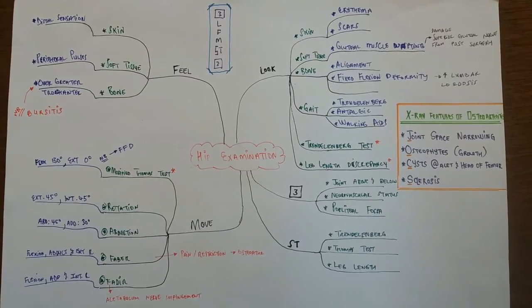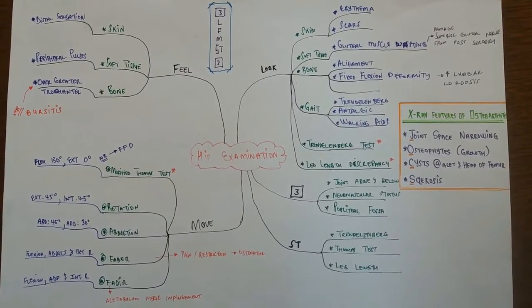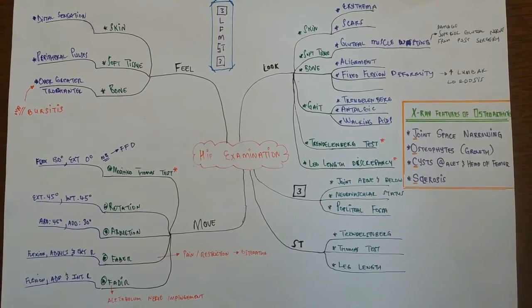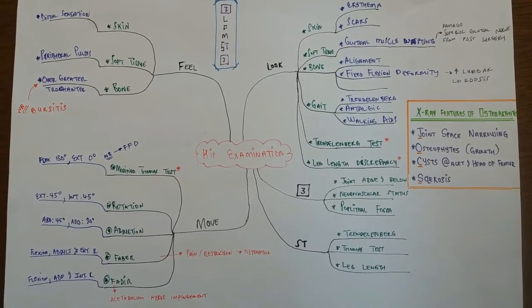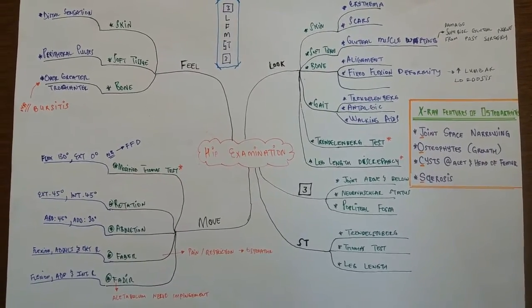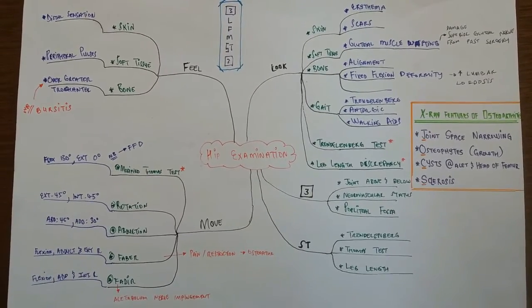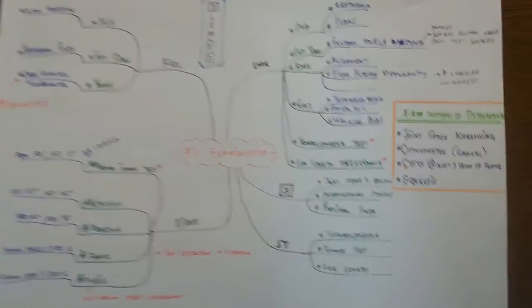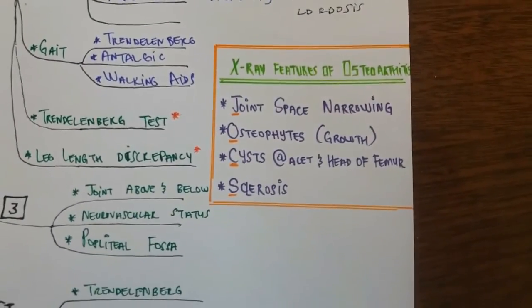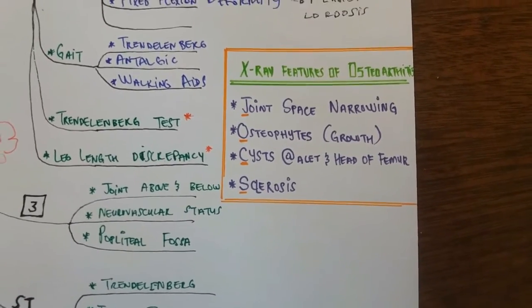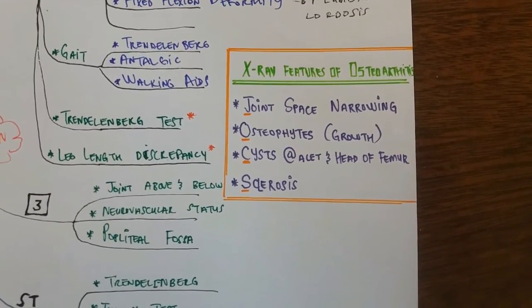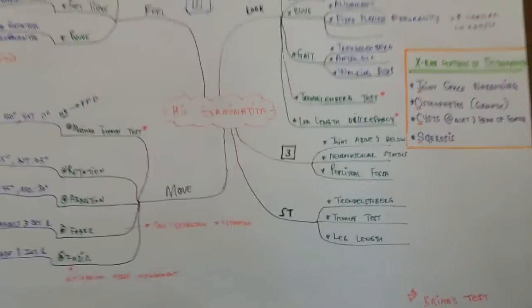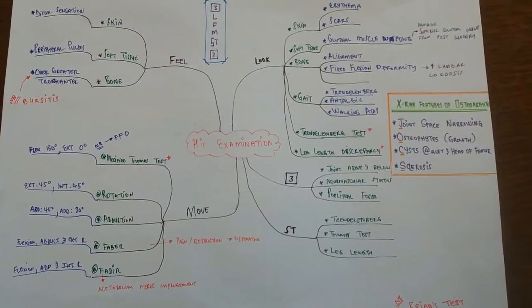To end things off, you can pause the video and take down this mind map that will assist you in remembering the hip examination from the song we first mentioned — Look, Feel and Move STN3. Everything is nicely summarized. We also give you a few nuggets on X-ray features of osteoarthritis, remembered by the mnemonic JOCS: Joint space narrowing, Osteophytes, Cysts, and Sclerosis. You can stop the video and take down the mind map. Hips don't lie. See you next time!